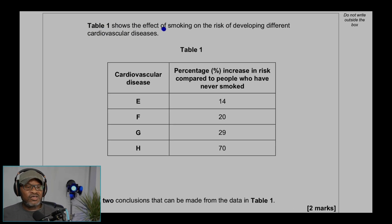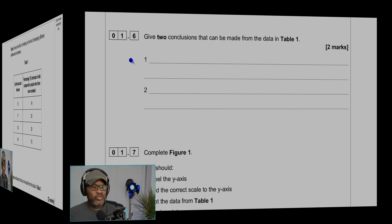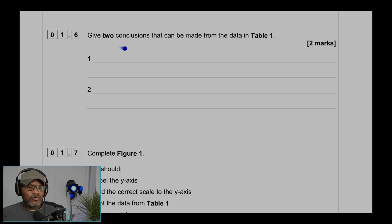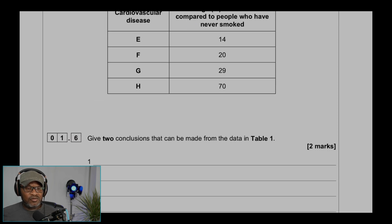Table 1 shows the effect of smoking on the risk of developing different cardiovascular diseases. Table 1: Cardiovascular disease E, F, G, H. Percentage increase in risk compared to people who have never smoked: 14%, 20%, 29%, 70%. Question 1.6: Give two conclusions that can be made from the data in table 1.